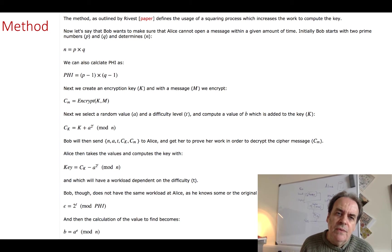In the method, what we do is we select two prime numbers p and q and we calculate n just like RSA. Then we calculate phi which is p minus 1 times q minus 1. Next we create a random encryption key and we take our message and we create our cipher message. From there we then select a random value a and a difficulty level t. So the difficulty level will define how difficult it is for Alice to compute the key, and that will relate to the amount of time that she'll take to complete the task.